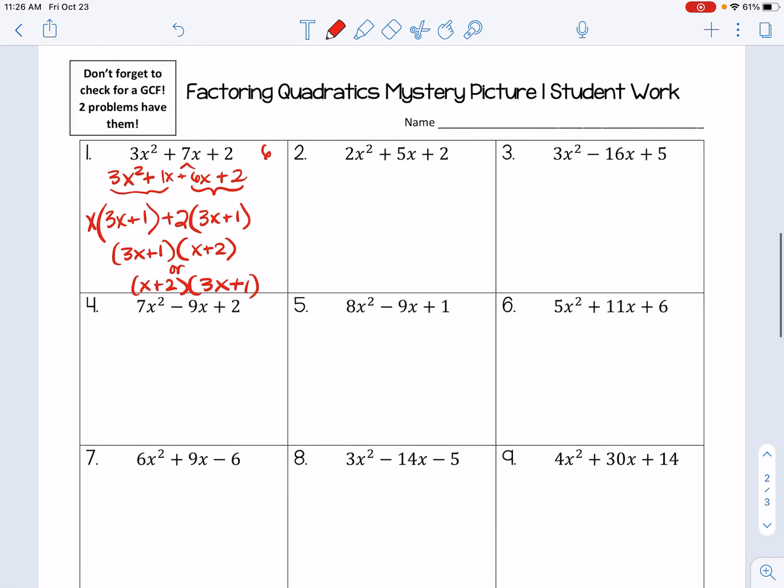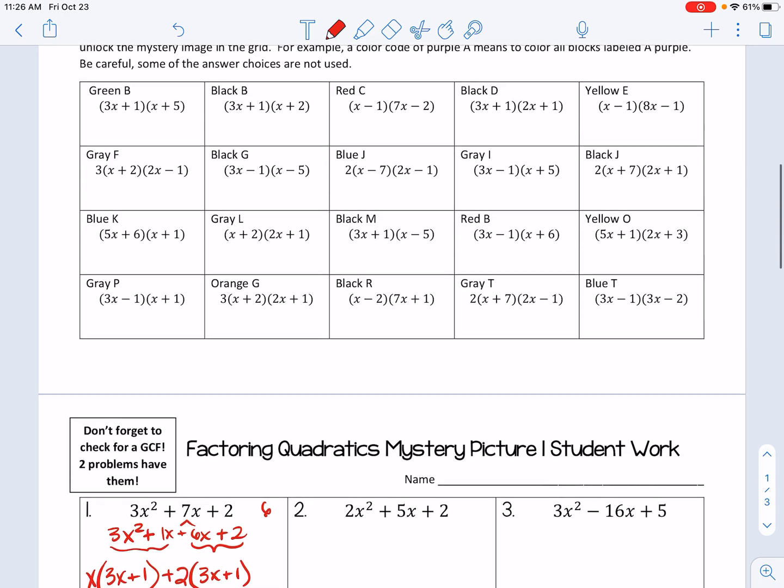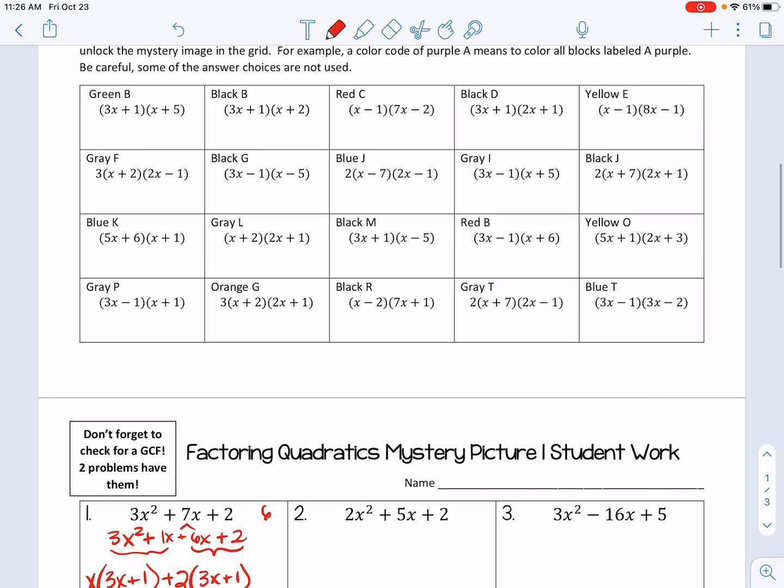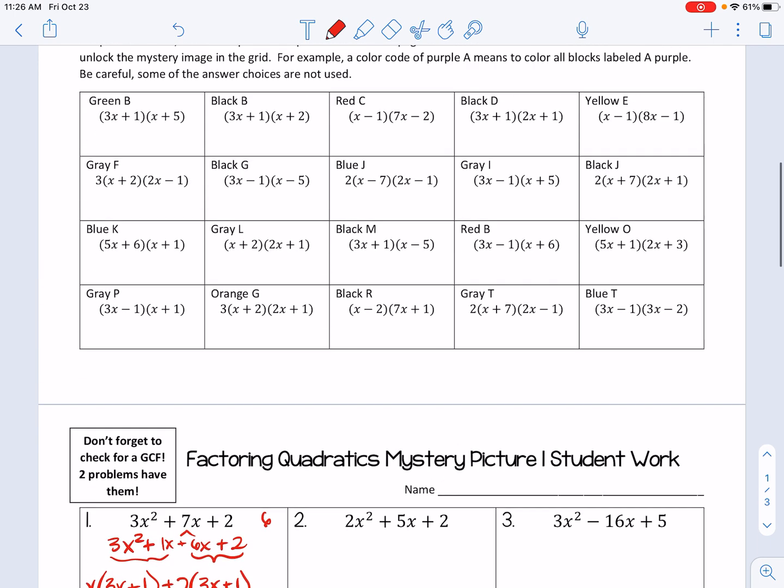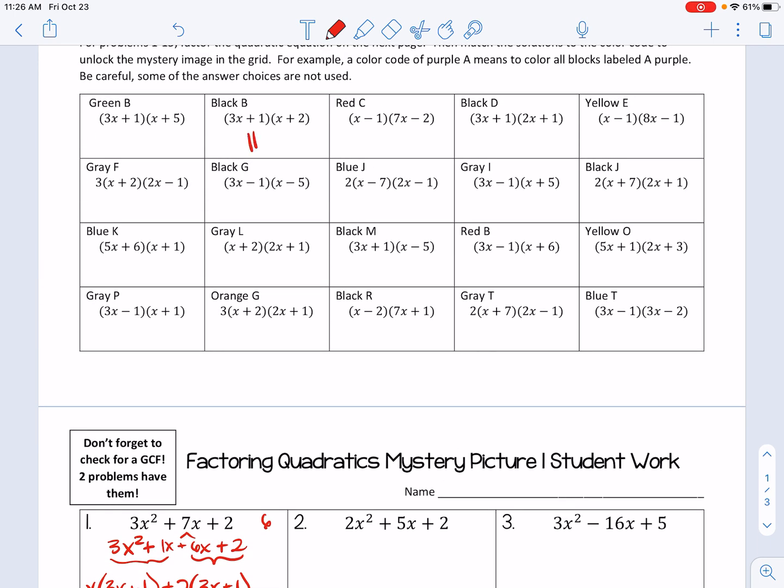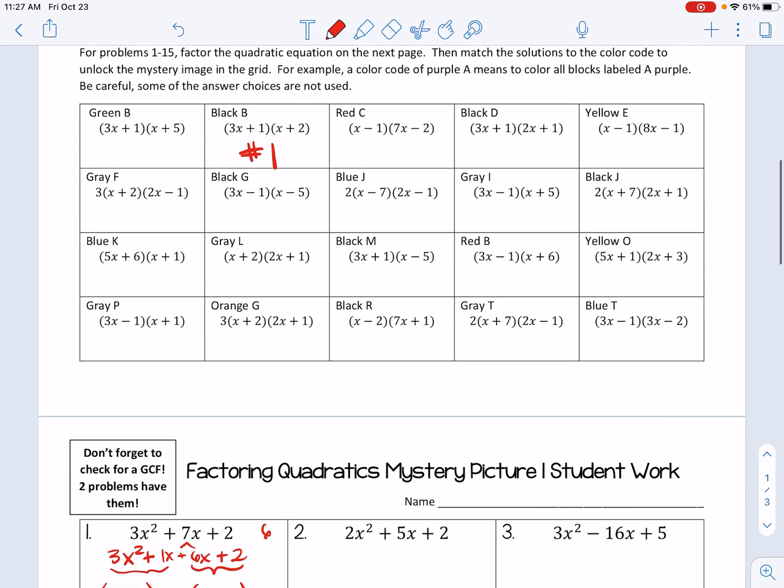So for this particular problem, I know my answer in factored form is 3x + 1 times x + 2. So I'm going to go up to this first page and I'm going to look for that answer. And I see it right here, double check. 3x + 1 times x + 2. So this is my number one answer.